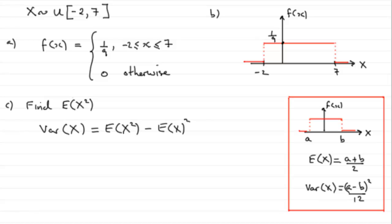Well, just as a recap, if you've got your uniform distribution going between a and b, E of X, the mean, is equal to a plus b divided by 2.